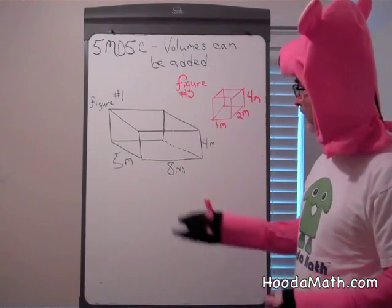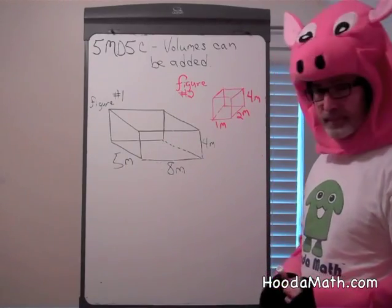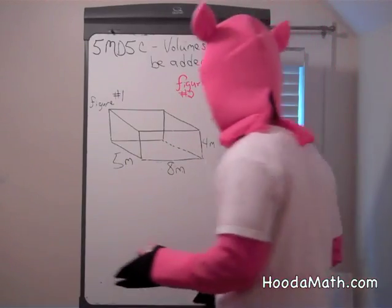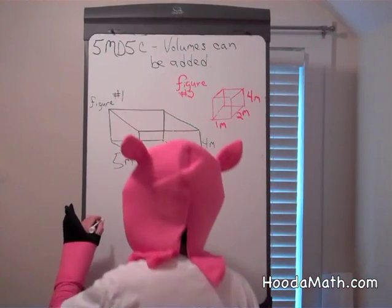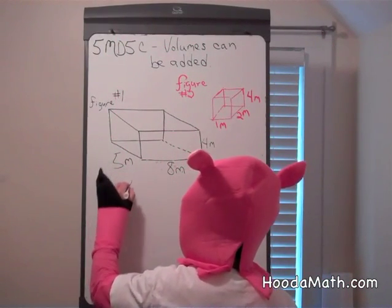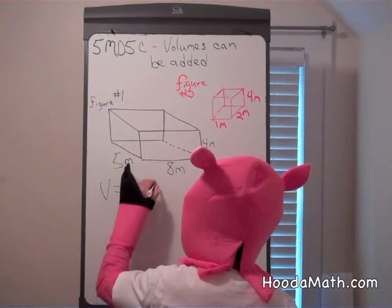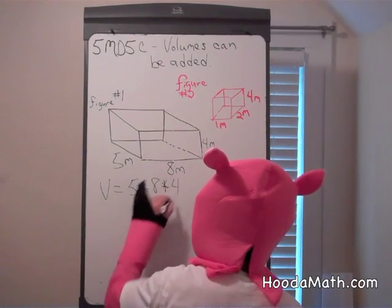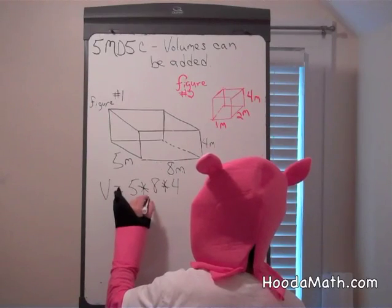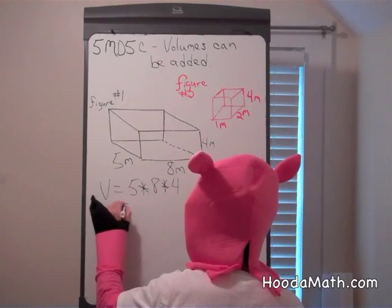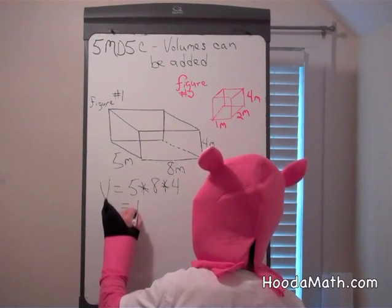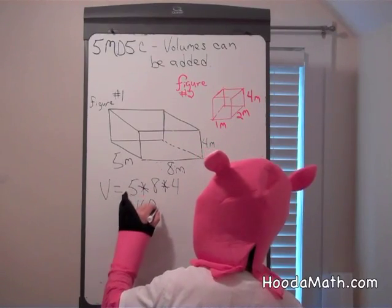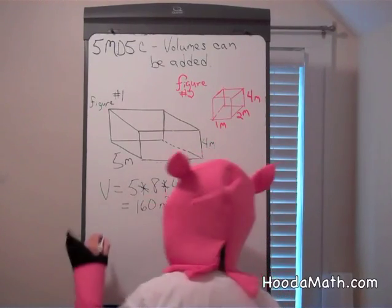So what we do is we find the volume of figure one, that tank, by multiplying the length times the width times the height and you get 40 times four or 160 cubic meters of volume.